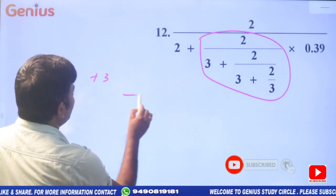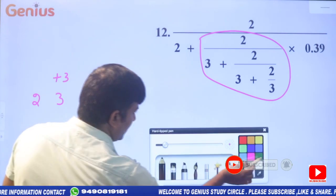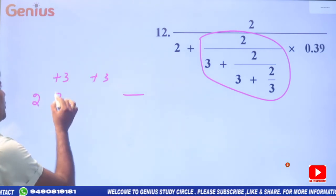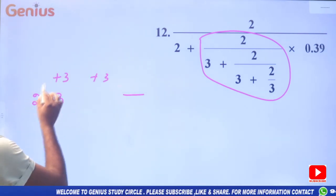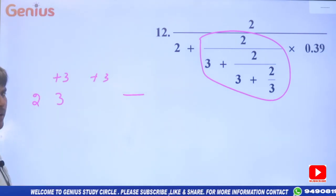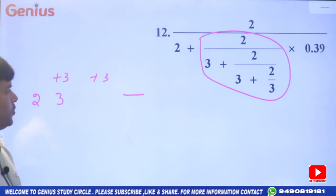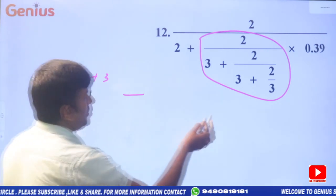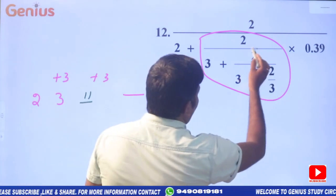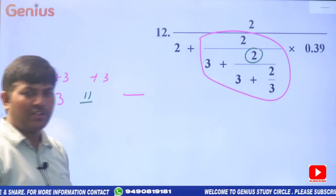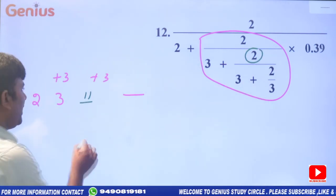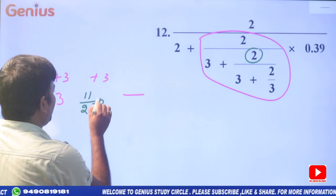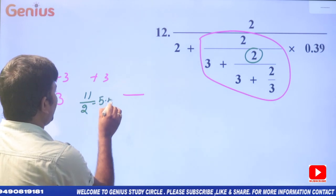Take 1 space more. Here 3 plus 3 is there; 9 plus 2 is there, that is equal to 11. But we have 11 divided by 2.